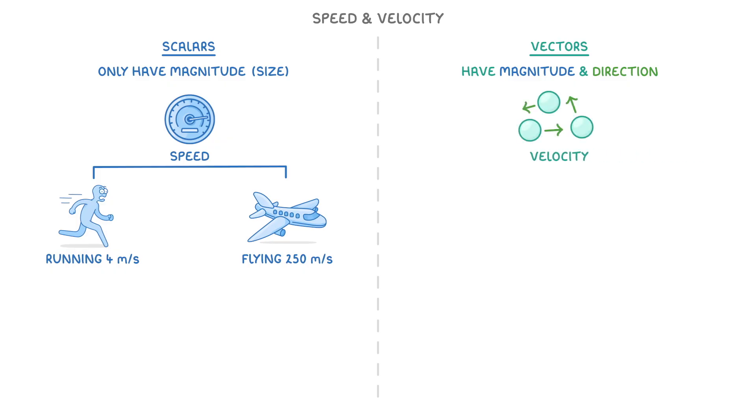Velocity, on the other hand, is a vector because it also has direction. Like a person cycling 6m per second east, or a train travelling backwards at 55m per second.